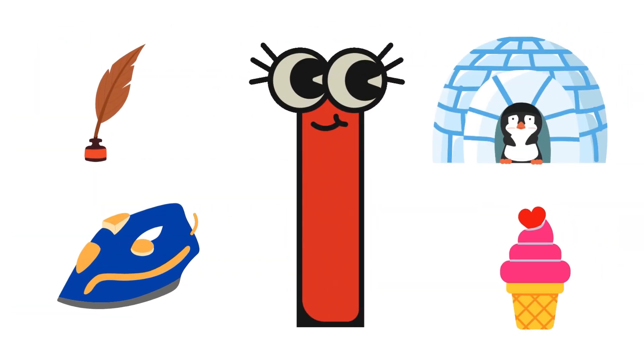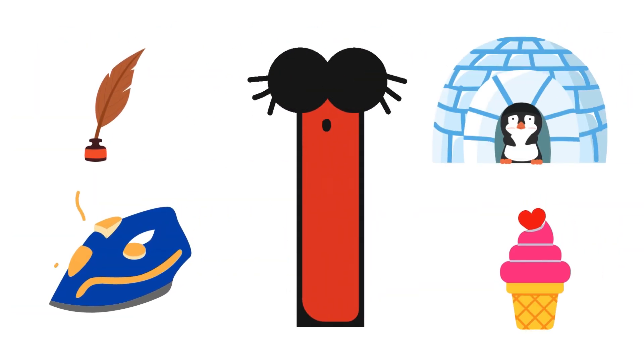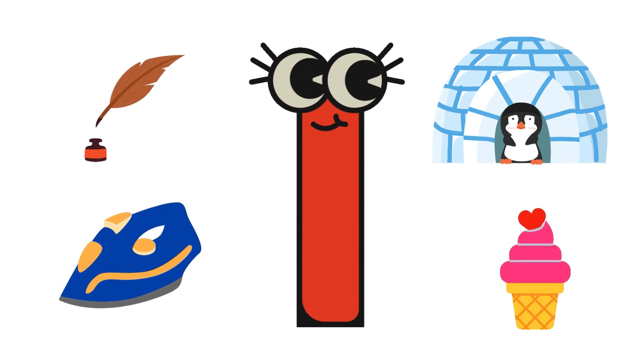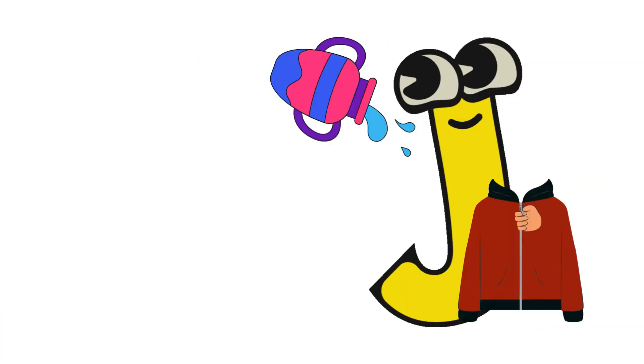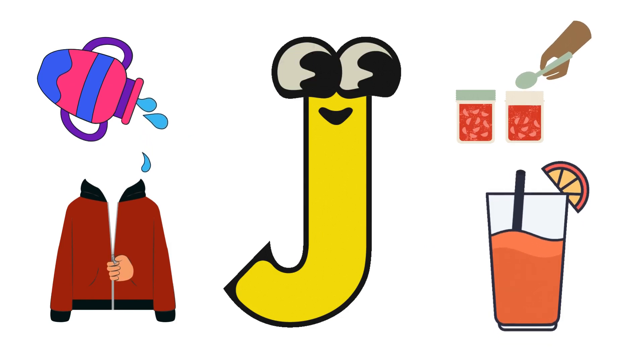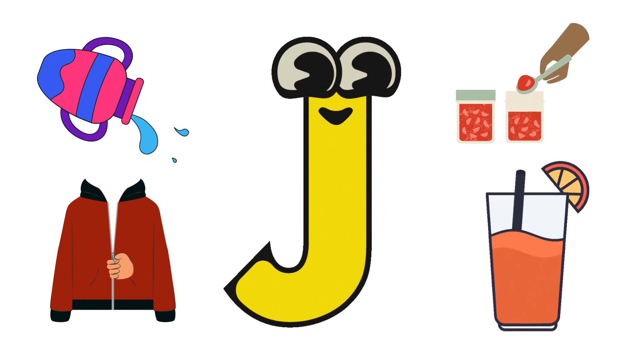I for ink, igloo, iron, ice cream. J for jug, jam, jacket, juice.